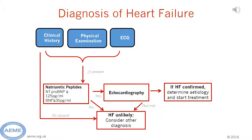we should go on and measure a natriuretic peptide, either an N-terminal proBNP or BNP. These are chemicals released from the atria when they're stretched. They're rather like the D-dimer of heart failure. If they're normal, it's very unlikely that this patient has clinical heart failure to explain their symptoms.